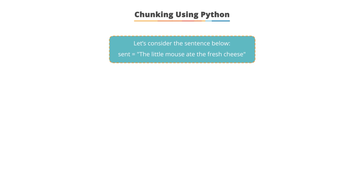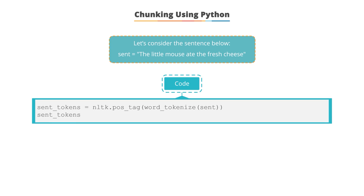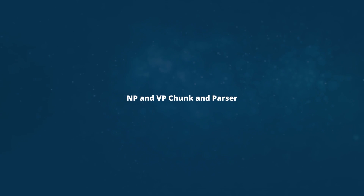Let's understand how chunking is performed in Python. Consider the sentence 'the little mouse ate the fresh cheese' assigned to a variable named 'sent'. Using the word_tokenize function under NLTK corpora, you can find the different tags associated with the sentence. Different tags are allocated against each word using chunking. Now we look at NP chunking and parsing.